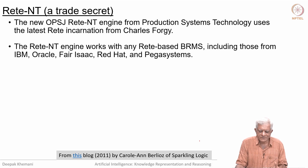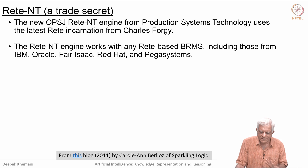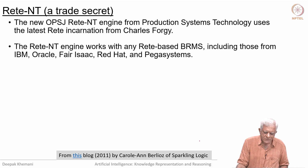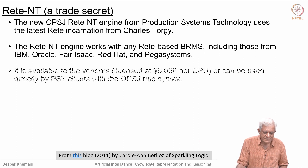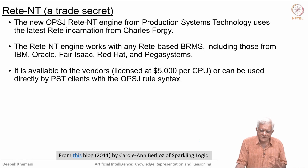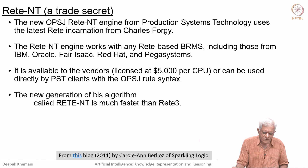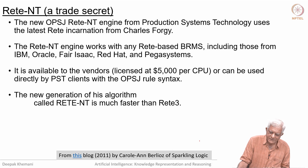Then came something called Rete NT. The OPS-J language uses the Rete NT engine from Production Systems Technology, which is what Charles Forgy started. Some people say 'rete,' some say 'reet,' including those from IBM and Oracle — it is not entirely clear which is the correct pronunciation. The Rete NT engine is much, much faster than Rete 3, and was commercially licensed at $5000 per CPU.